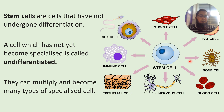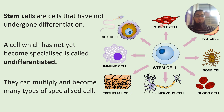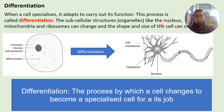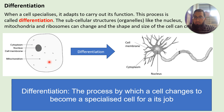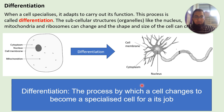A cell that has specialized is called a specialized or differentiated cell. You need to know some of those differentiated cells — for example, nerve cells and muscle cells — and how they are adapted for their job. Differentiation is the process by which a cell changes to become specialized for its particular job. Pause the video and write this down.